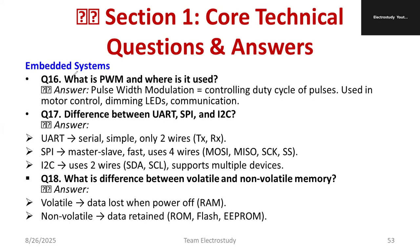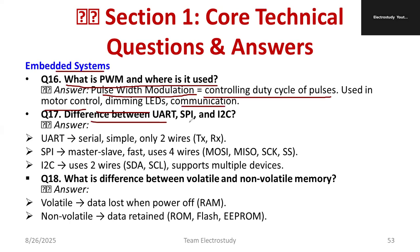From embedded systems: what is PWM and where is it used? PWM — Pulse Width Modulation — controls the duty cycle of pulses. It is used for motor speed control, light dimmers, and communication systems.